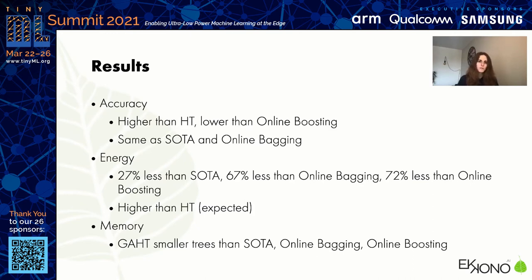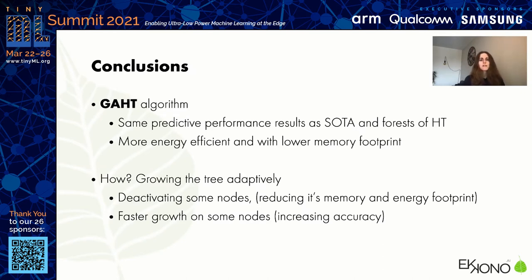To conclude, we are presenting the Green Accelerated Hoeffding Tree algorithm, which shows the same predictive performance as state-of-the-art ensembles of Hoeffding trees, with greater energy efficiency and a low memory footprint. We achieve this by growing the tree adaptively — deactivating some nodes and growing faster the other parts of the tree — which reduces memory and increases accuracy.